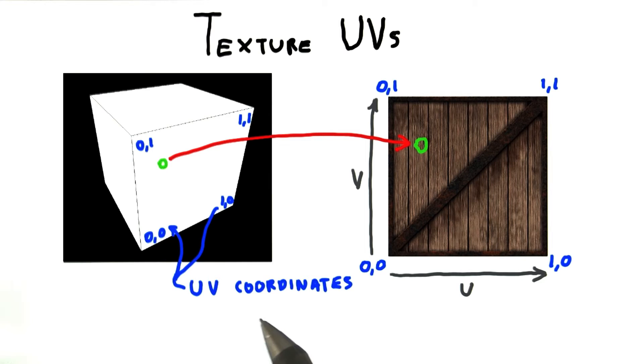Just like any other attribute attached to a vertex, these values are interpolated across each triangle during rasterization. Every pixel fragment generated for the surface will have these values available.